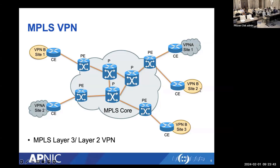For MPLS Layer 2 VPN, the service provider does not participate in customer routing. Instead, the provider acts as a switch providing Layer 2 connectivity between customer VPN sites. The customer has direct Layer 2 reachability to another site and can run whatever protocol they want on top of this Layer 2 connection.